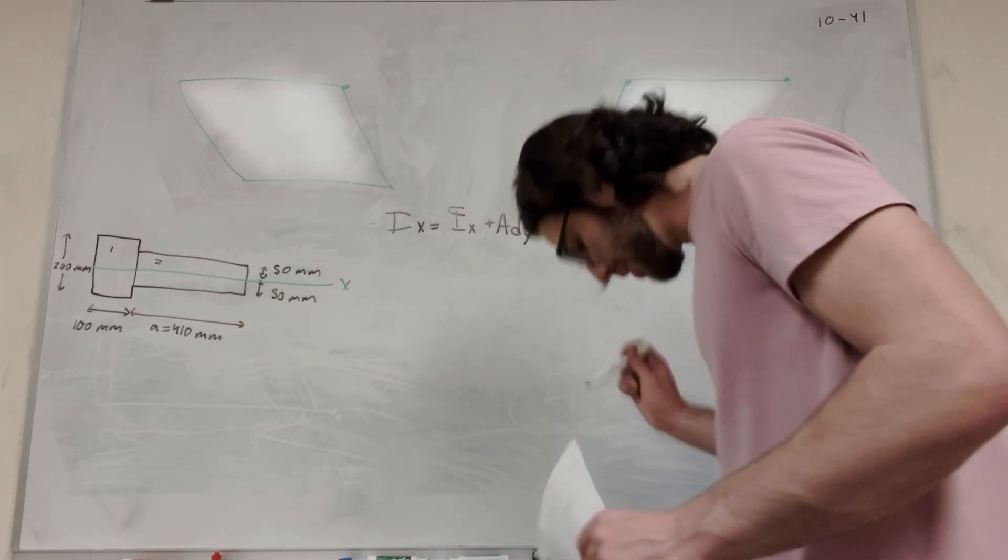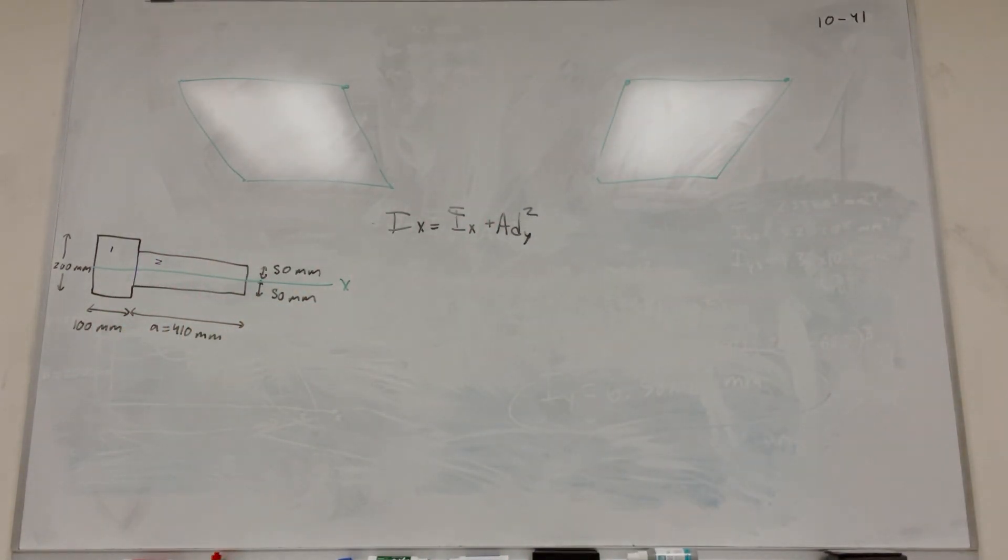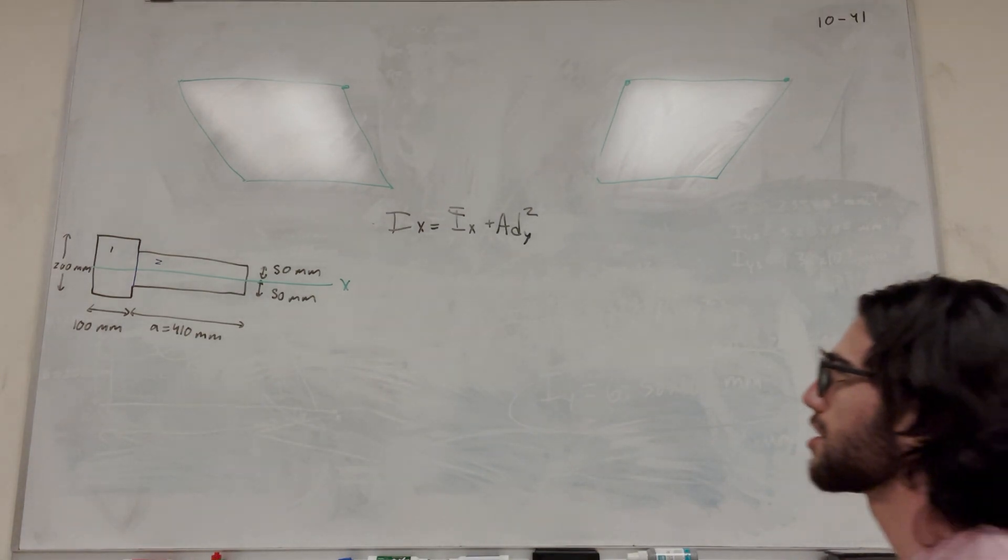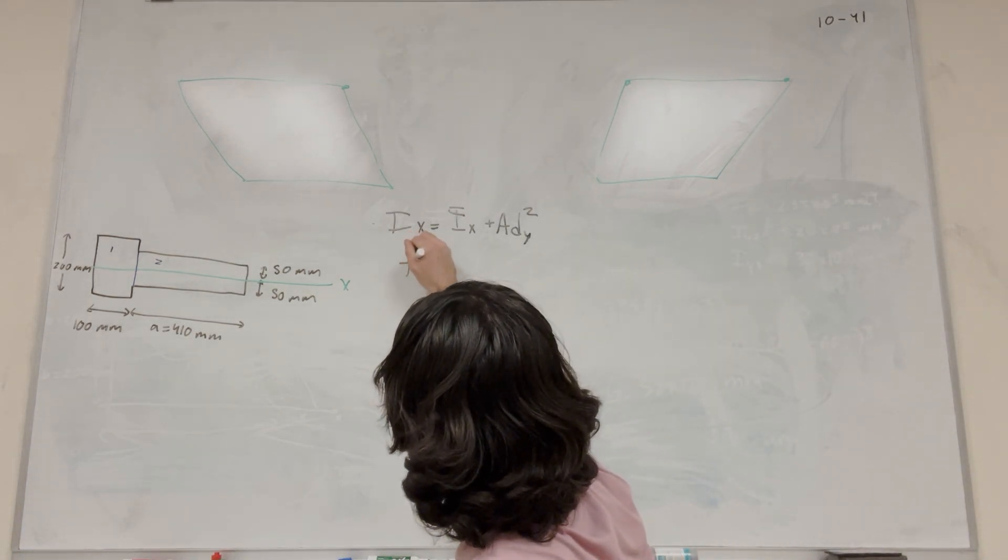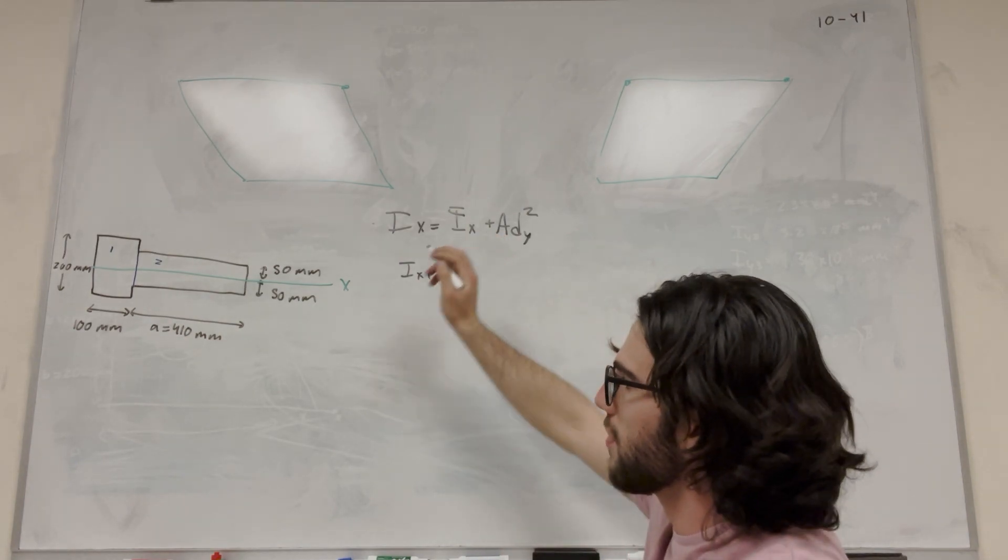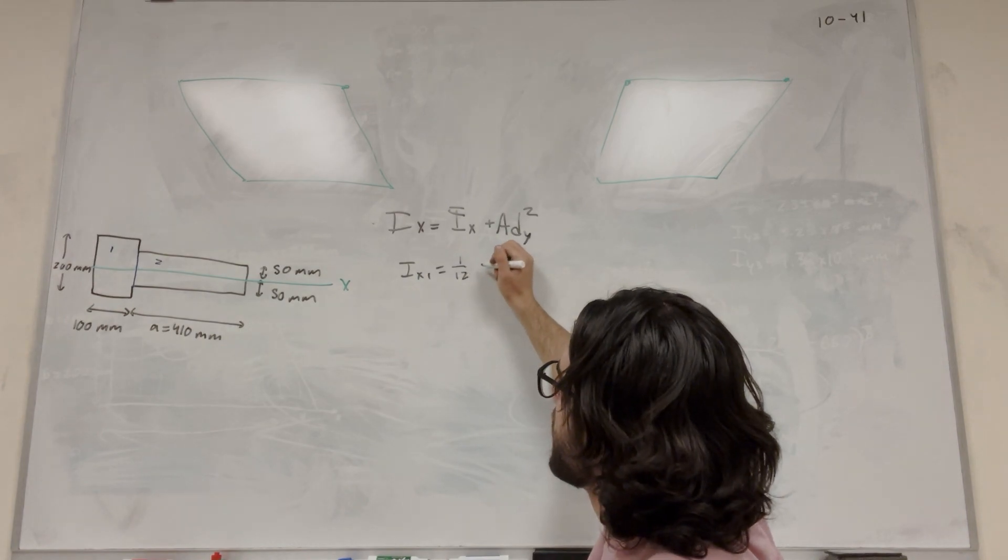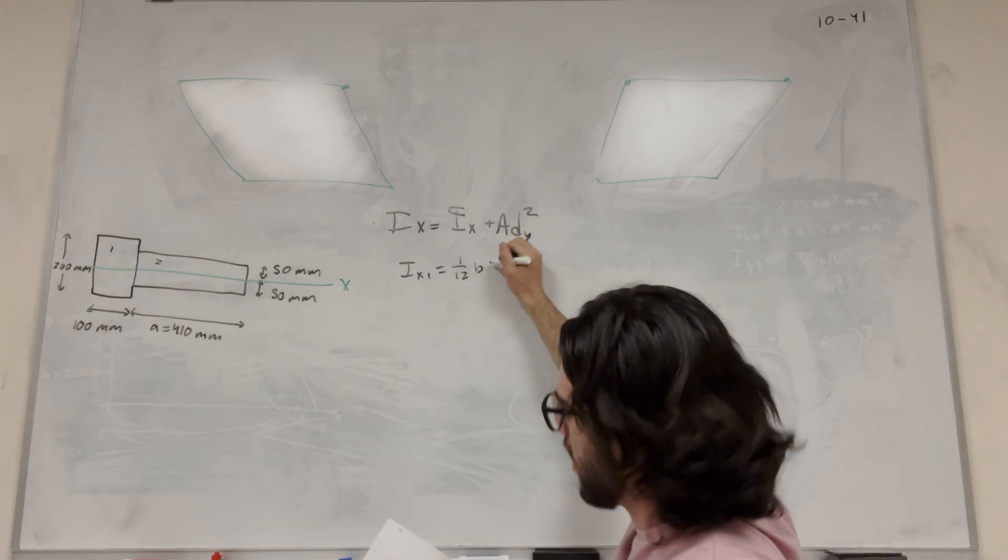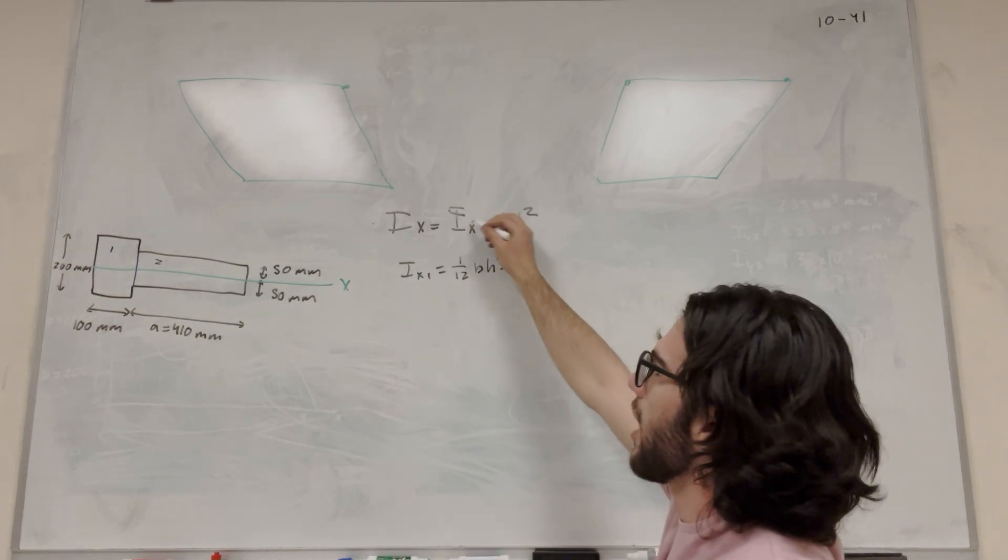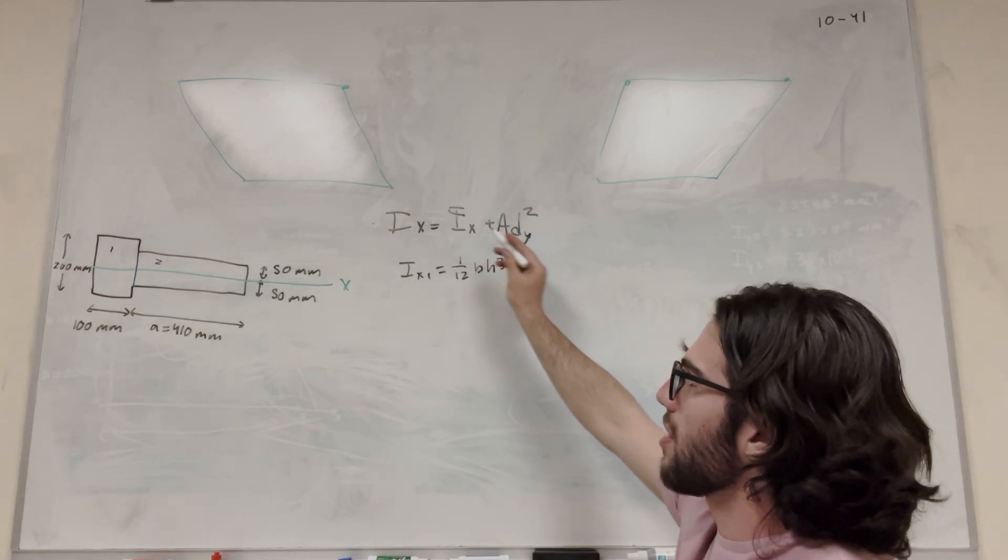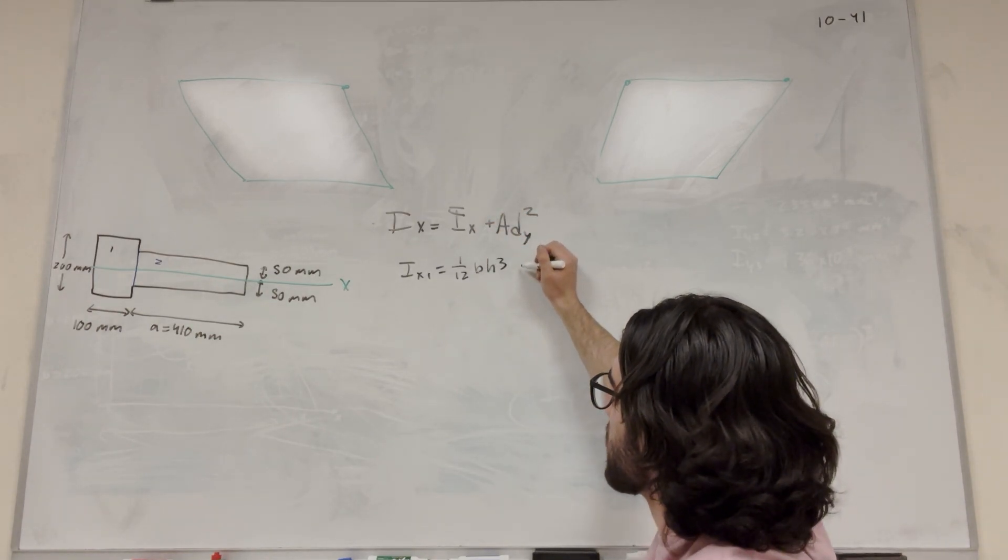Alright, let's start with 1. So I_x1, for I bar, for a rectangle it's 1 over 12 times base times height to the third. This is something you can find, so let's keep rolling with it.